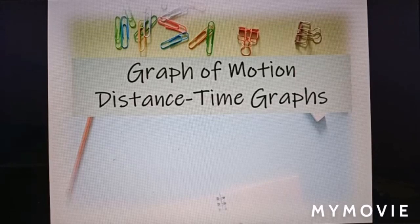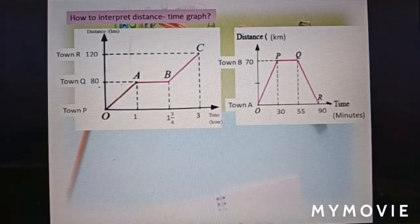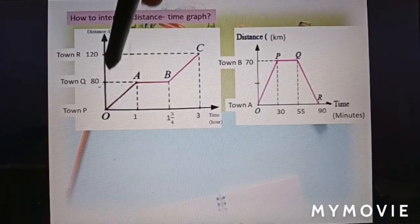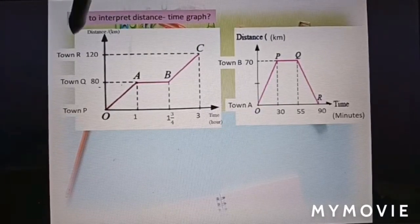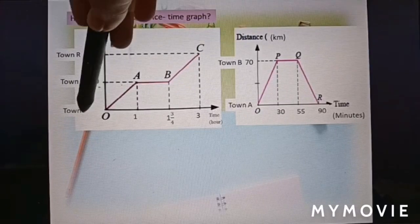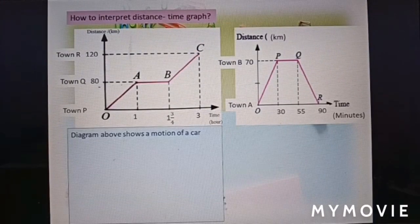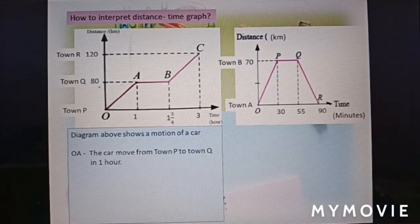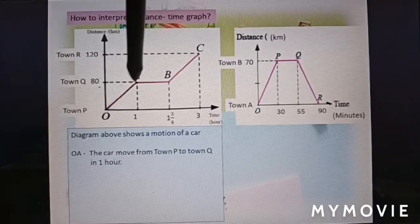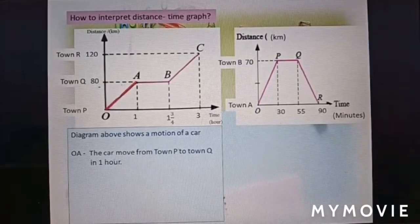In this video I'm going to discuss distance-time graphs. The distance-time graph has the vertical axis representing distance and the horizontal axis representing time. The diagram shows the motion of a car.